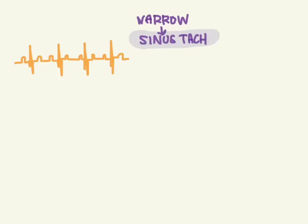Starting with the narrow rhythm of sinus tach: some features of sinus tachycardia include a history that is consistent with it — maybe someone has a fever or they're dehydrated, and there's been something that led them to develop sinus tach. If you look at the waveforms, there will always be P waves present. While the heart rate may vary, they'll remain tachycardic — maybe 140, then 160, then 150 — but the PR interval will stay the same.